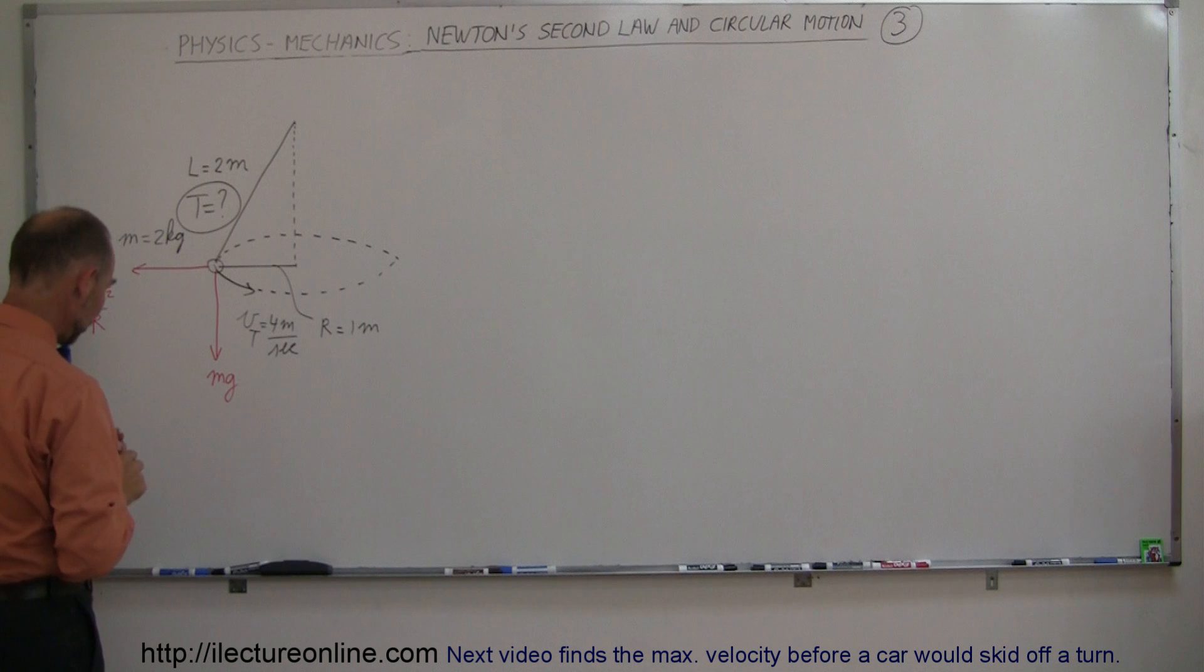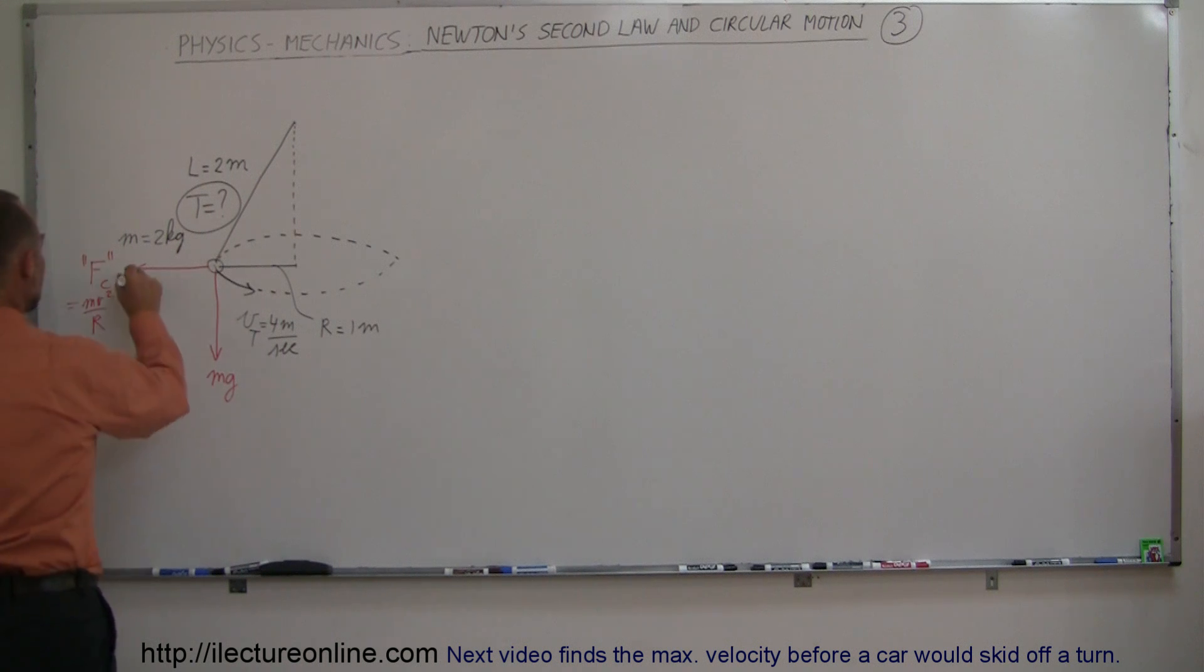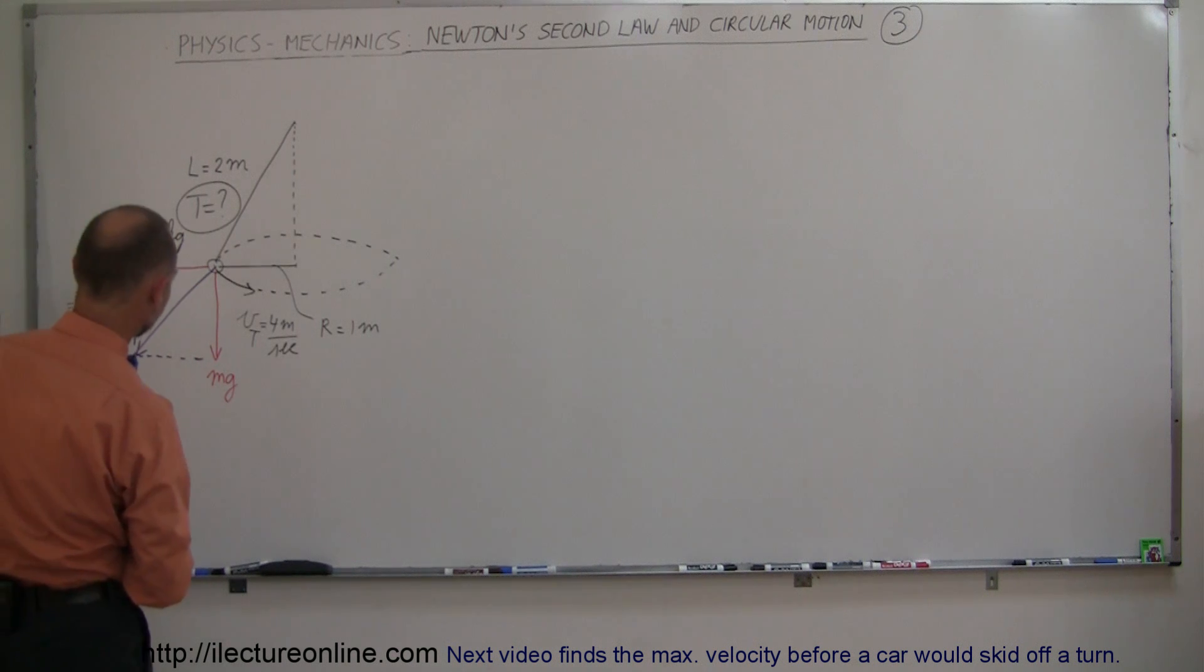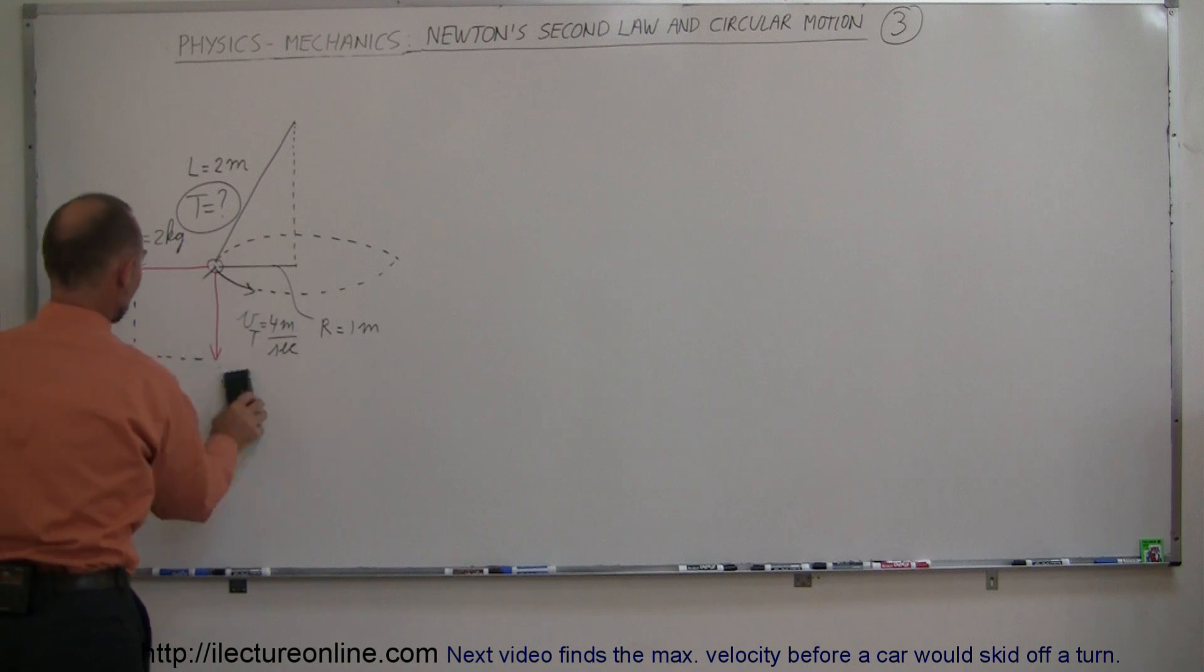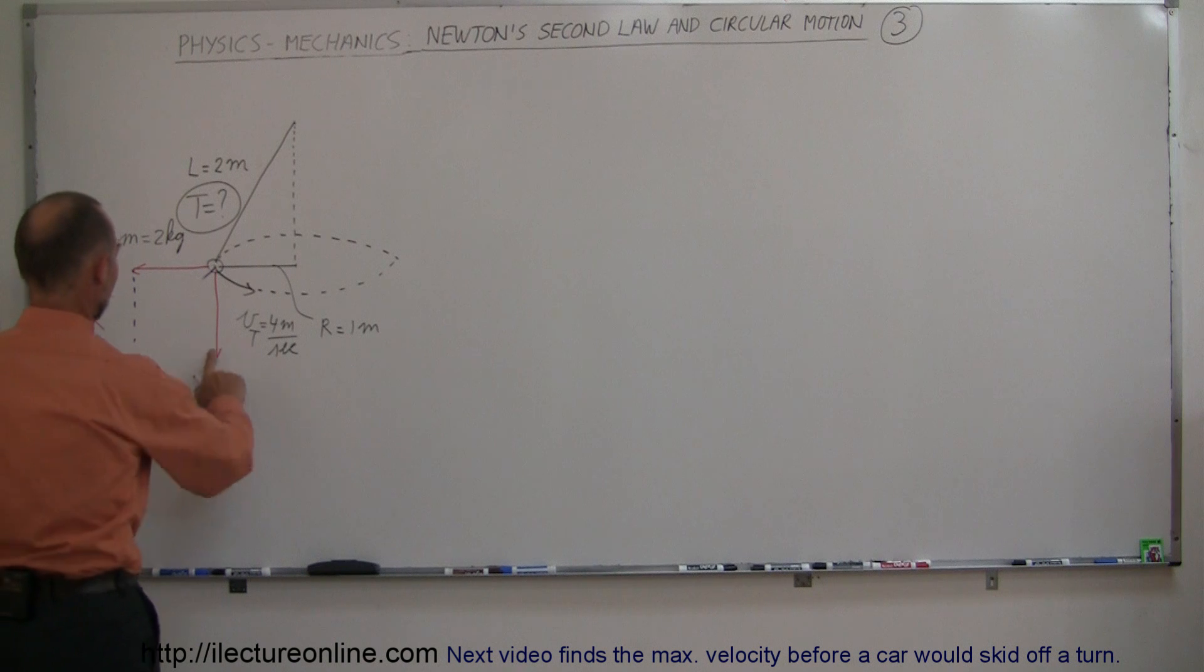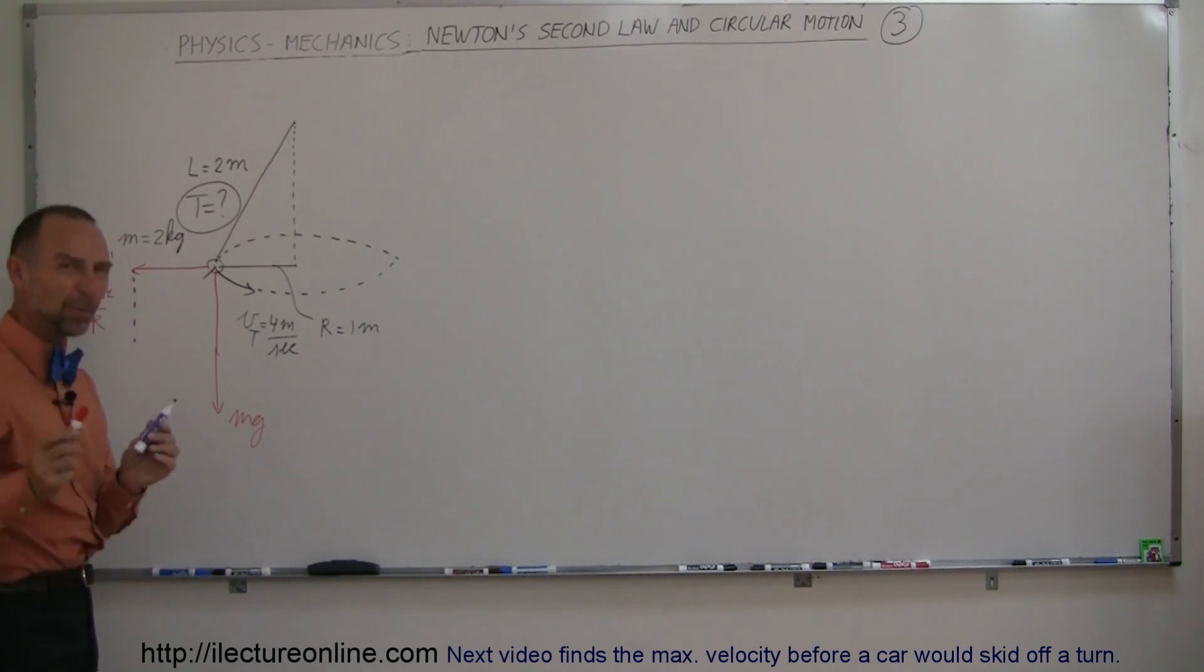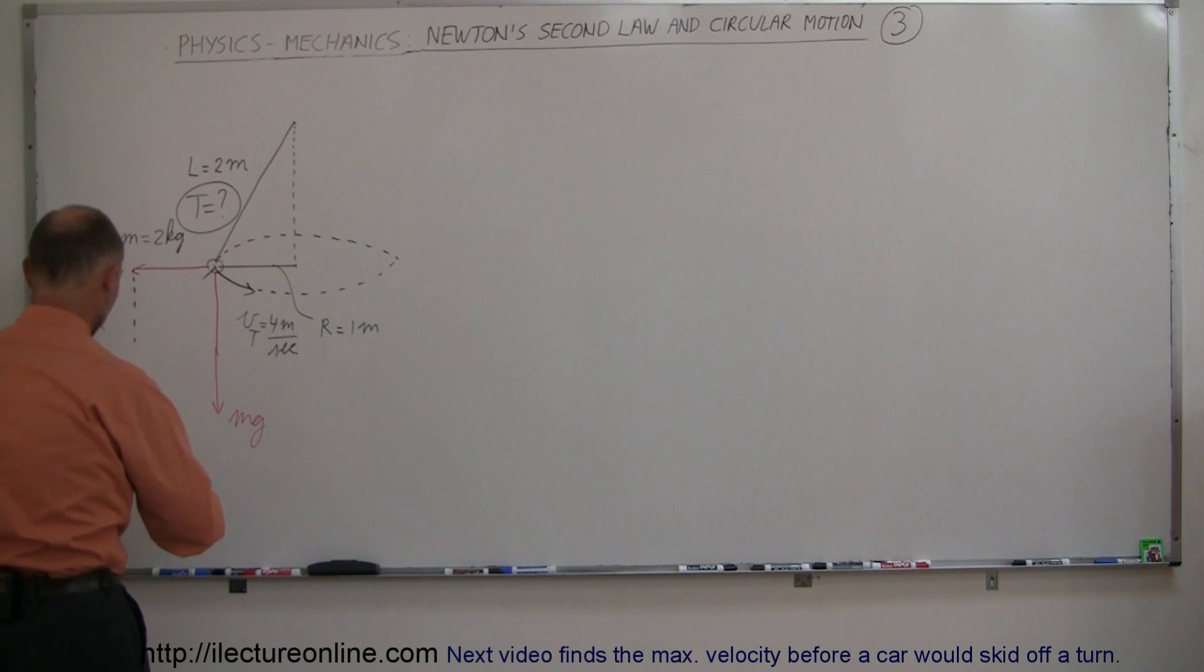Now, when we add these two forces together vectorially, we get a resultant. Let me draw this a bit longer so you can see visually what this looks like. This is our mg.